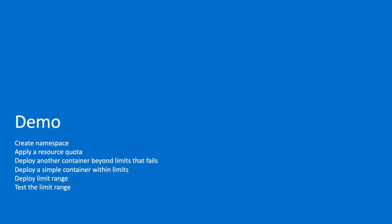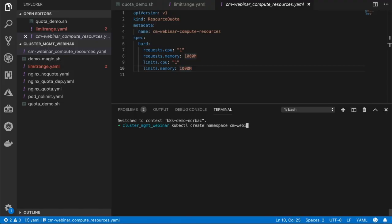Now let's move to the demo section. In this demo, we're going to create a namespace, apply a resource quota on it, deploy a container beyond the limits that will fail, deploy a simple container within the limits that should pass, then apply a limit range policy on this namespace and test it.